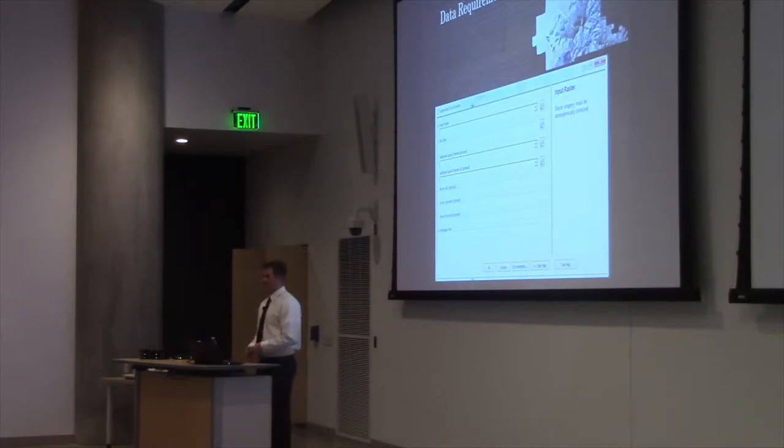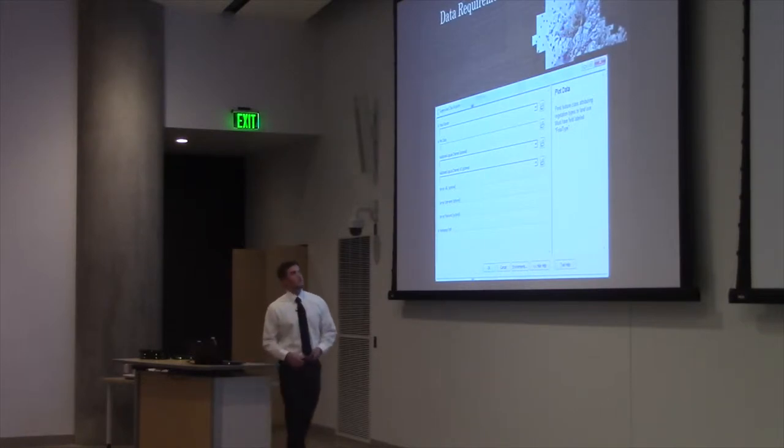Your input raster has to be a raster dataset and it must be atmospherically corrected. Plot data. This has to be a point feature class attributing the vegetation types or the land use with a field called final type.